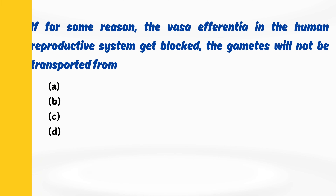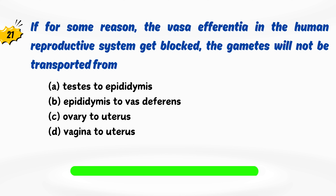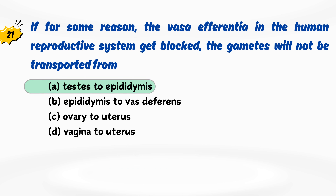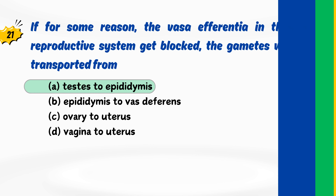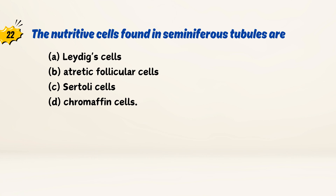If for some reason the vasa efferentia in the human reproductive system get blocked, the gametes will not be transported from? The nutritive cells found in seminiferous tubules are?